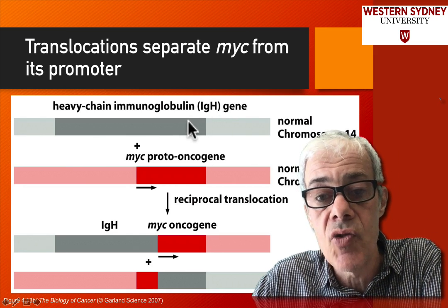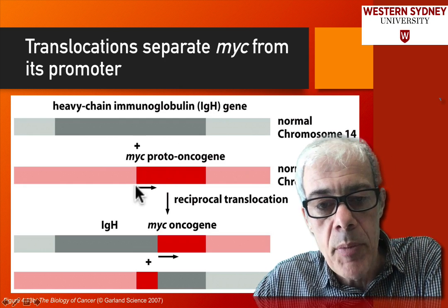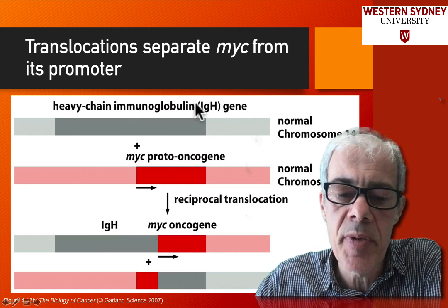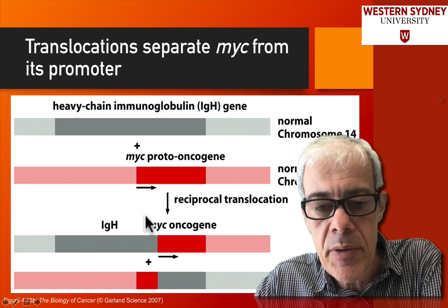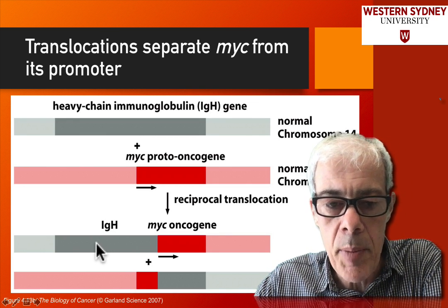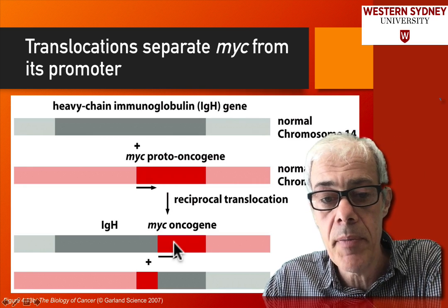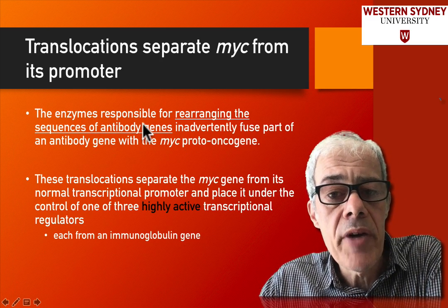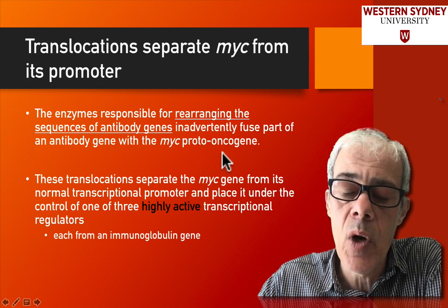But sometimes this gene rearrangement goes wrong. Rather than rearranging the immunoglobulin gene on one chromosome, the cell takes a sequence from another chromosome and mixes that up with the immunoglobulin gene. This is a bit of normal gene rearrangement occurring, but it's gone wrong and included another sequence in the rearrangement. Unfortunately, the sequence that's been included tends to be this MYC oncogene, put upstream or downstream of one of these highly active promoters, so that the enzymes normally responsible for rearranging antibody gene sequences inadvertently fuse part of the MYC proto-oncogene to the wrong promoter.